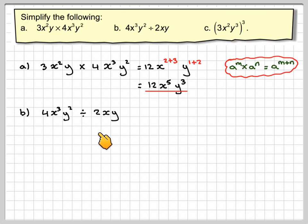For the division, we've got 4x cubed y squared divided by 2xy. Better to write it as a fraction. So 4x cubed y squared over 2xy. The rule is a to the m over a to the n is a to the m minus n.